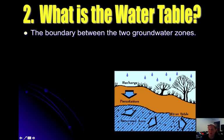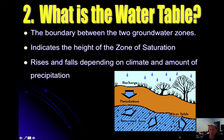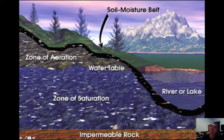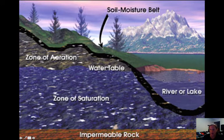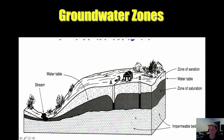If you live in a very dry area like Arizona, their water table is very low because they get very little precipitation. It rises and falls depending on climate and the amount of precipitation. Another diagram shows your impermeable bedrock, the zone of saturation, the water table boundary, and the zone of aeration. Rivers and lakes are part of your zone of saturation and also define your water table. When people drill wells, they drop them into the zone of saturation.